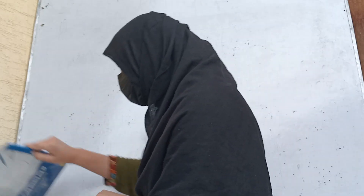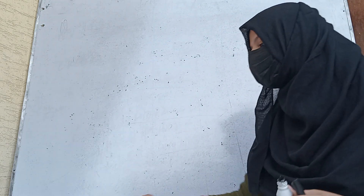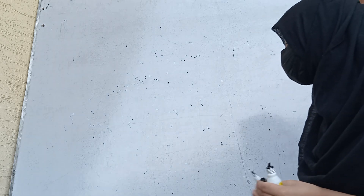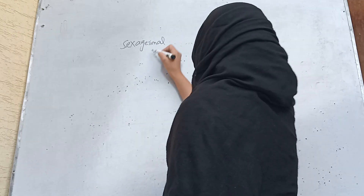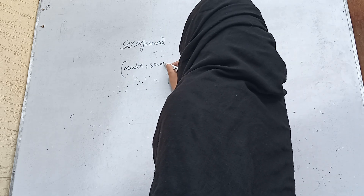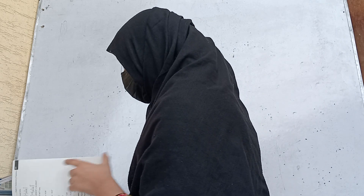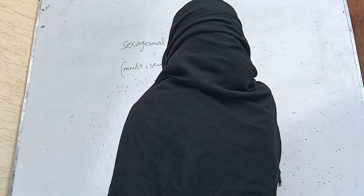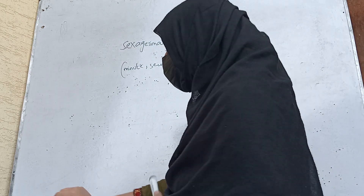So we have the first question: express the following sexagesimal measures of angles in radians. When we convert degrees, we first know what the sexagesimal system is. It is a mixture of three units which are degree, minute, and second — this is called the sexagesimal system. So first we express the following sexagesimal measures of angles in radians.